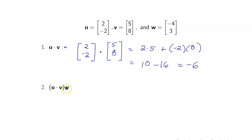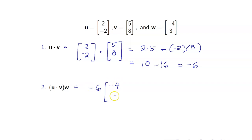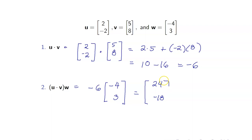Next, u dot v times w. Remember that u dot v is just a scalar, negative 6. So this is just negative 6 times the vector w, which is negative 4, 3. Hence, this is equal to 24, negative 18.